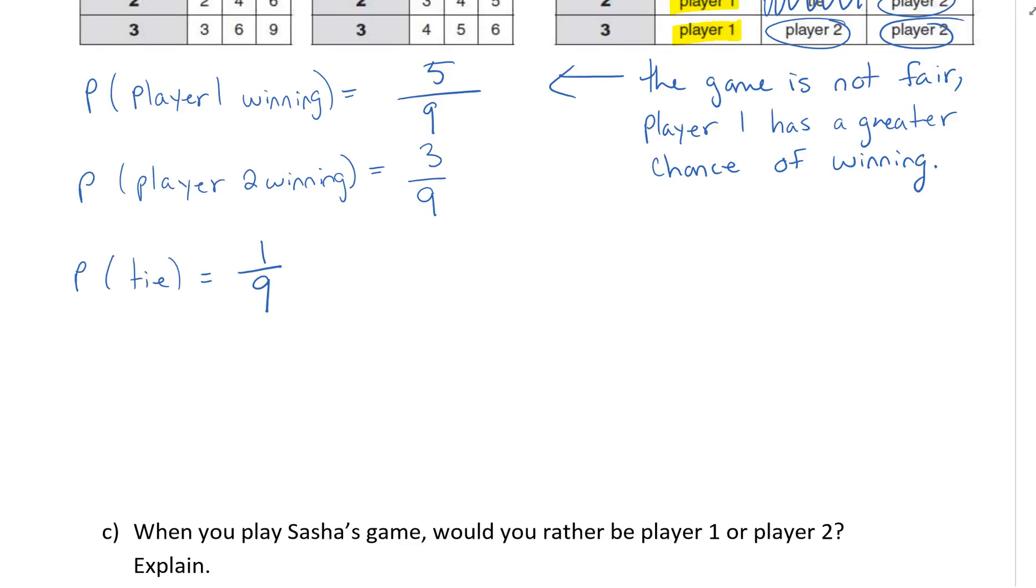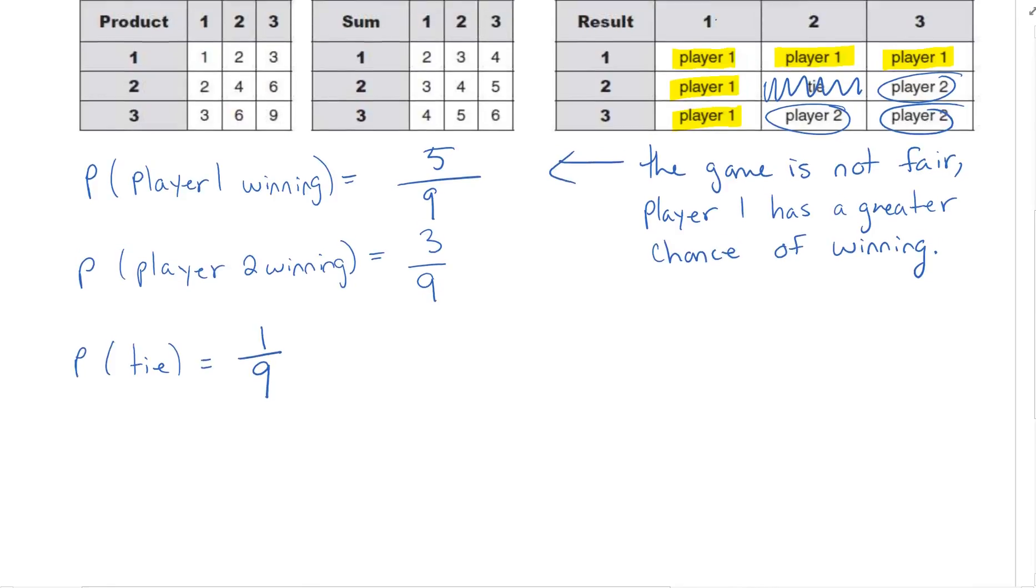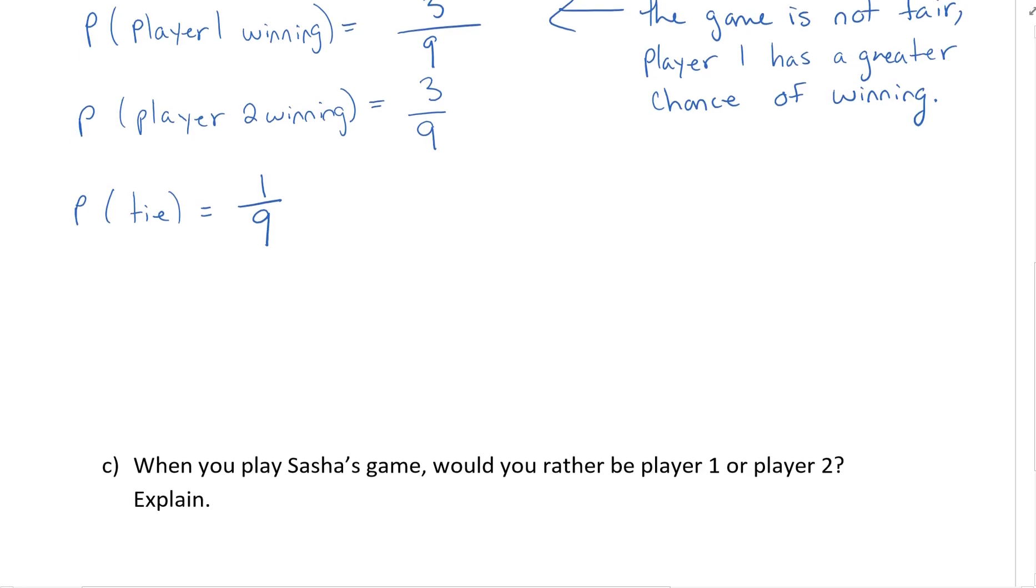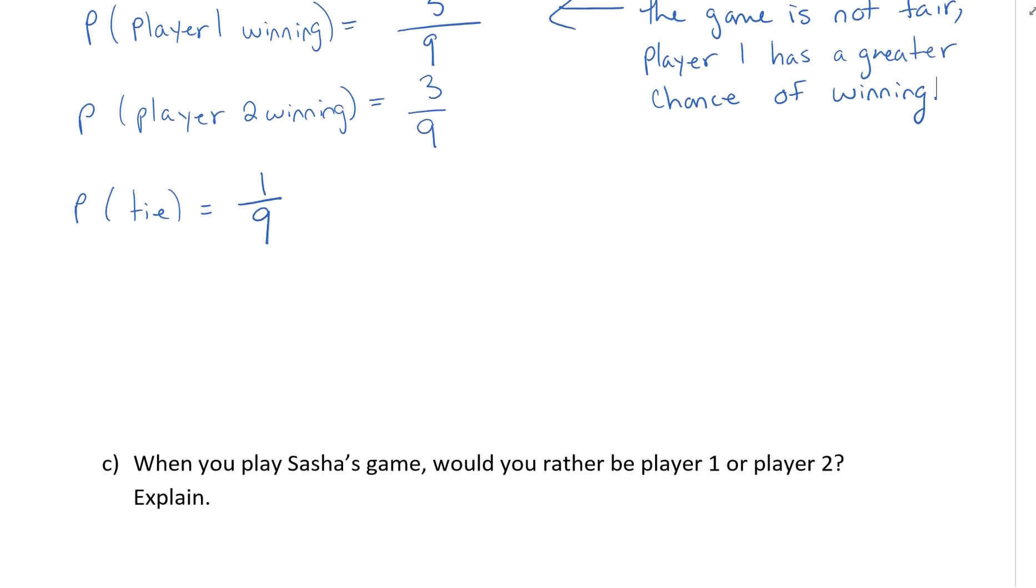Another type of question we like to ask is what can you do to ensure that both players have an equal chance of winning and then you can change the game around to adjust the probabilities. So you should be able to do that type of question as well. That's it for today's lesson. Thanks for joining me.